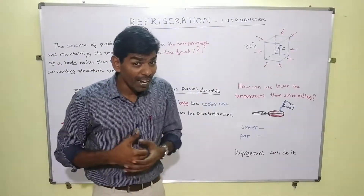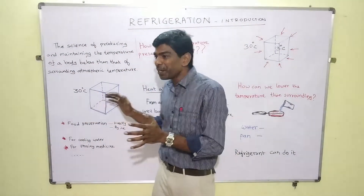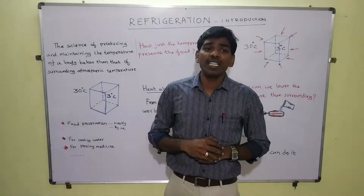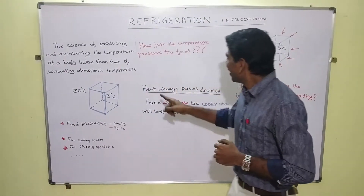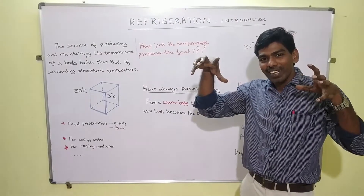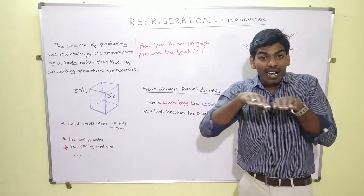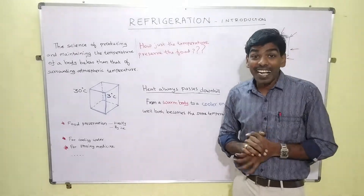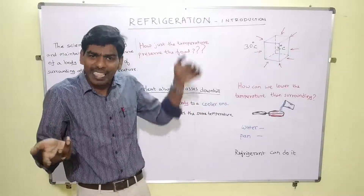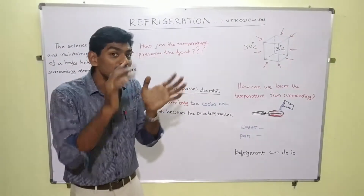Frozen food items need to be kept in a freezer at much lower temperatures. We need to create a space and maintain the temperature. Before going further, there is another important concept: heat always passes downhill. If a body is at a higher temperature, it tries to move towards a body at a lower temperature until the temperatures become equal — just like water flows from higher elevation to lower elevation. Heat passes downhill from a warm object to a cooler one.